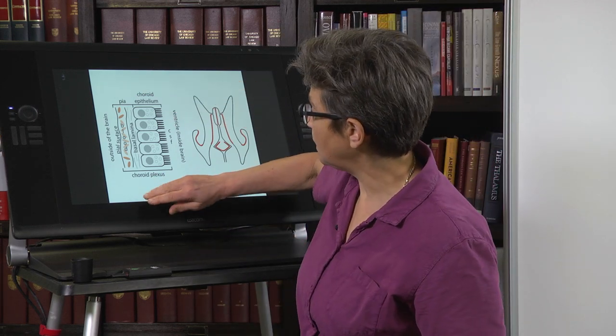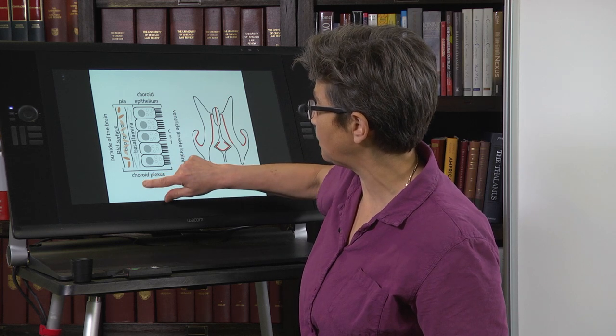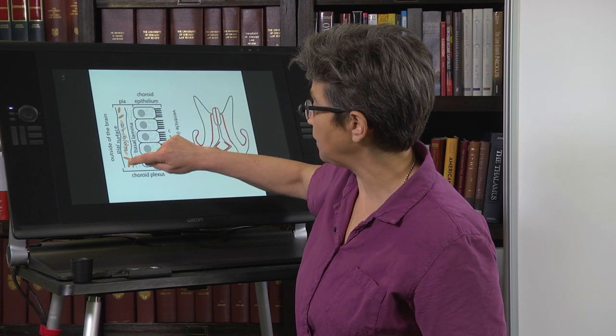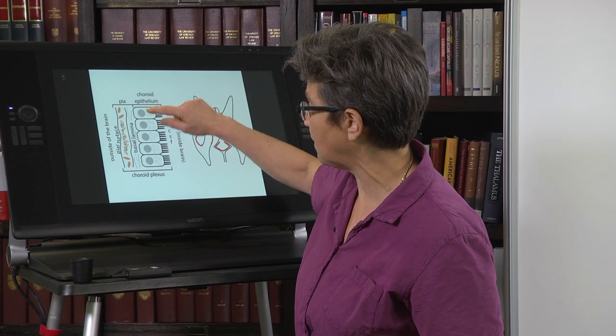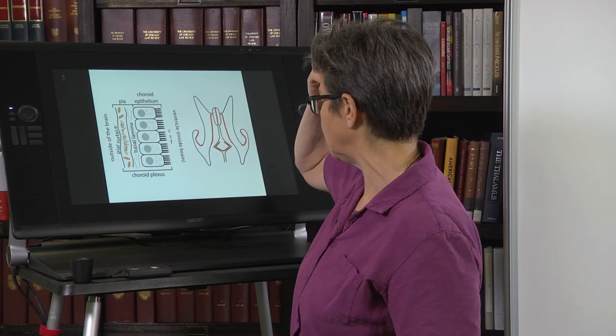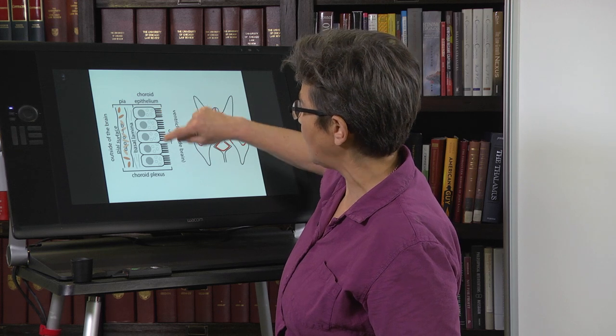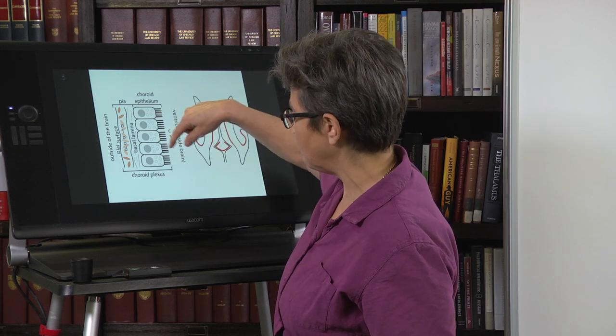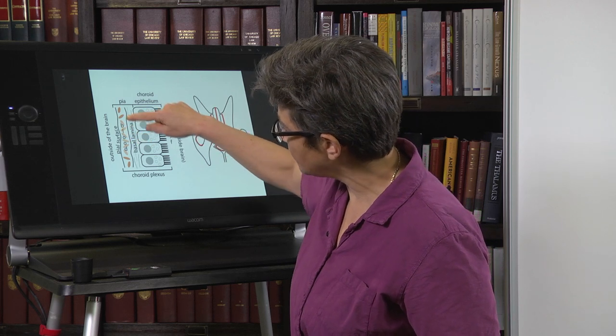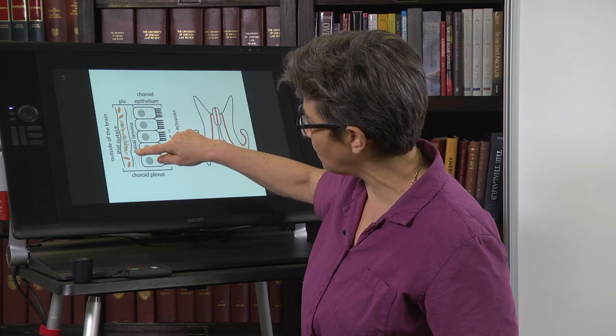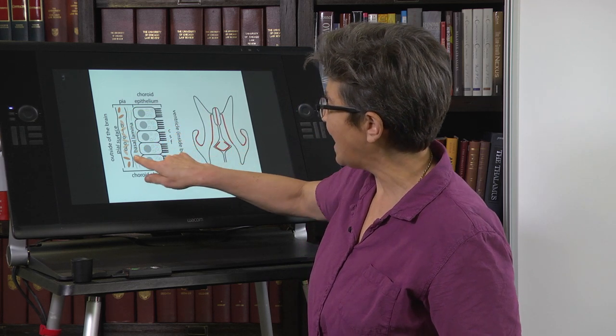And what we see here is a diagram of what the choroid plexus looks like. There's blood, the capillaries are here, there's a basal lamina, and then there's this choroid epithelium with all these little villi on the ventricular side. The blood comes out of the capillaries and is filtered by the choroid epithelium.